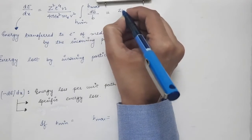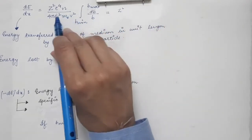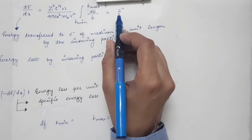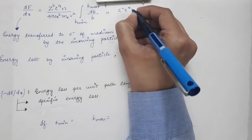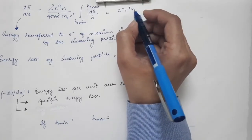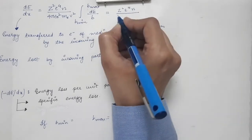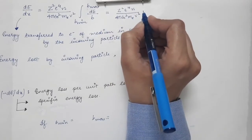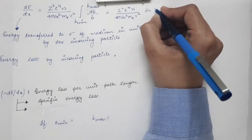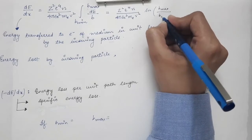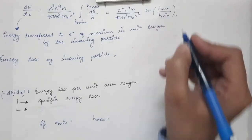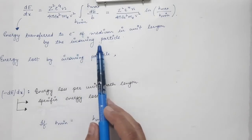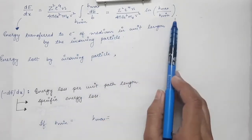This expression came out to be equal to Z squared, where Ze is the charge on the heavy charged particle, times e to the power 4 times n, the number of electrons per unit volume in the medium, divided by 4π epsilon-naught squared times mass of electron times V squared, multiplied by the natural log of b_max over b_minimum. This is the energy transferred to electrons of the medium in unit length by the incoming heavy charged particle.